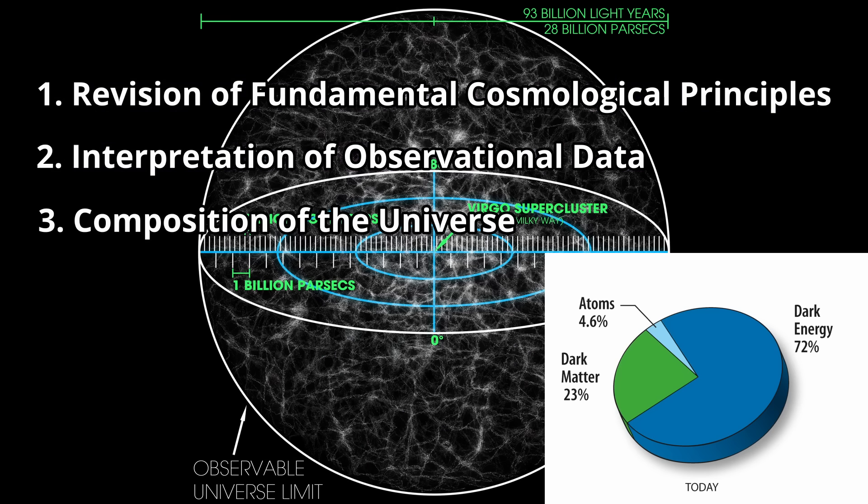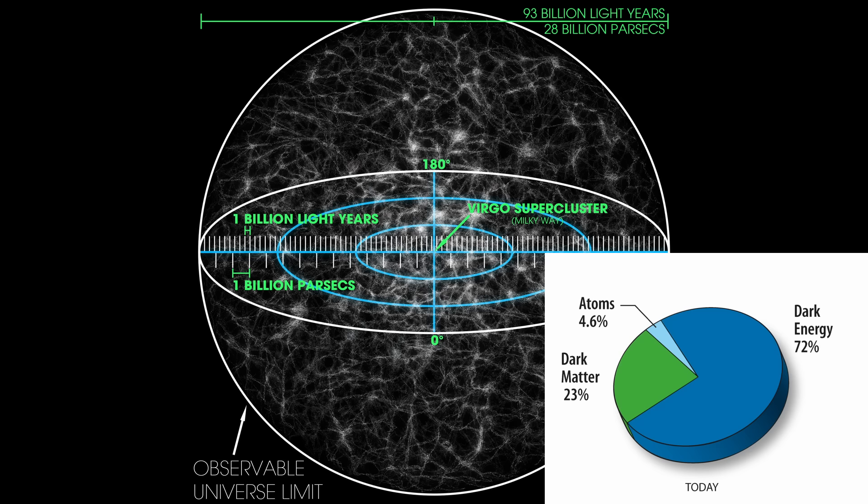3. Composition of the Universe. The model's implication that all critical density is comprised of baryonic matter without the need for dark matter suggests a significant departure from the current understanding of the universe's composition. This challenges the prevalent paradigm where dark matter plays a crucial role in shaping large-scale structures and gravitational interactions in the cosmos.